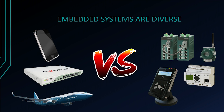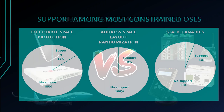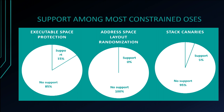This situation is even worse when you consider that embedded systems are very diverse. Smartphones, network equipment, and avionics are not the same as industrial control systems or card readers, which are much more constrained. Looking at operating systems used in the most constrained devices, only 15% have executable space protection, 5% have stack canary support, and none have ASLR support. This is a terrible situation.